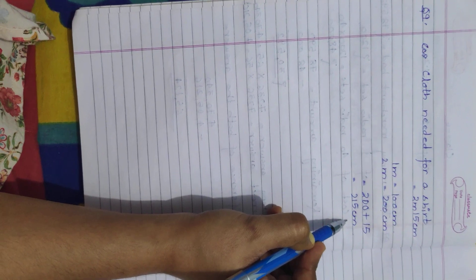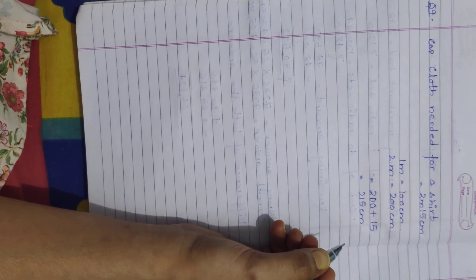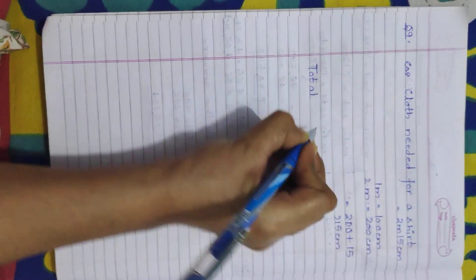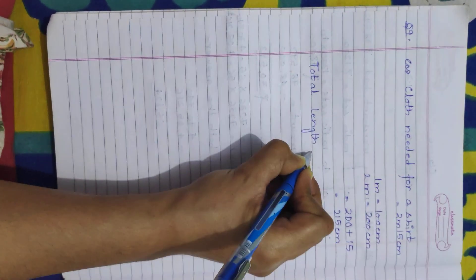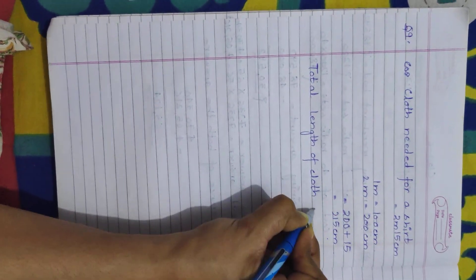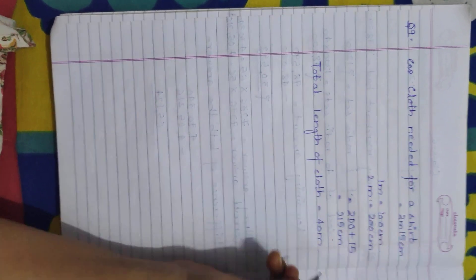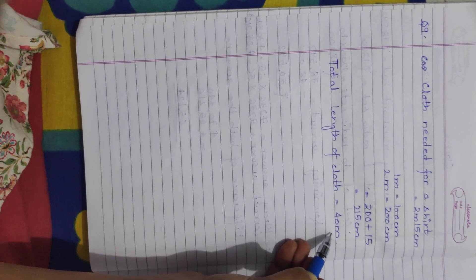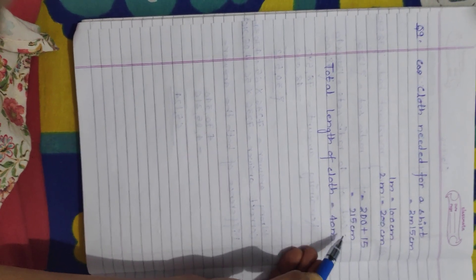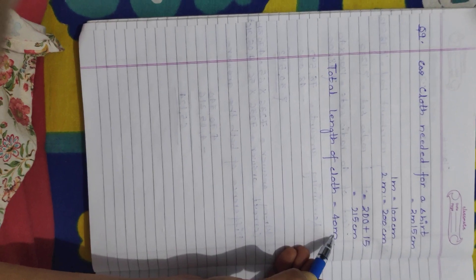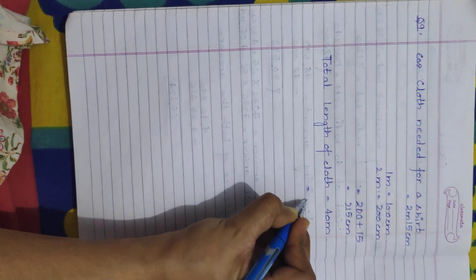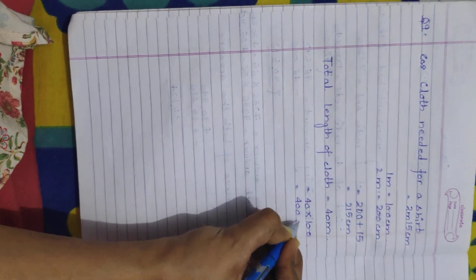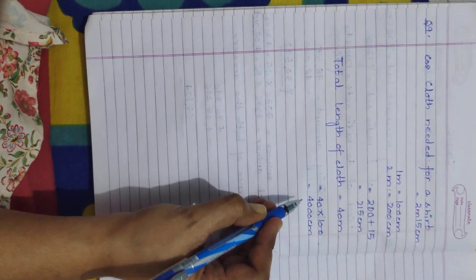Now, the total length of cloth is 40 meters. We have converted the shirt measurement into centimeters, but this number is in meters. Whenever solving a question, the numbers must have the same unit. So, we will convert 40 meters into centimeters by multiplying 40 by 100, giving us 4,000 centimeters. The total length of the cloth is 4,000 centimeters.